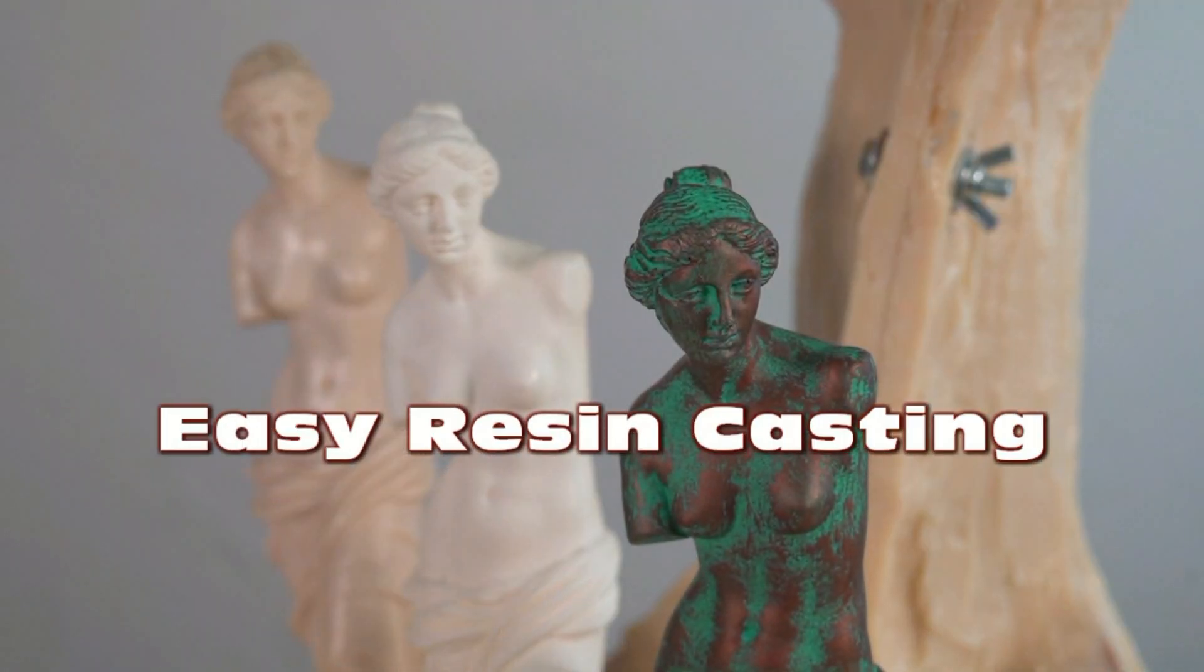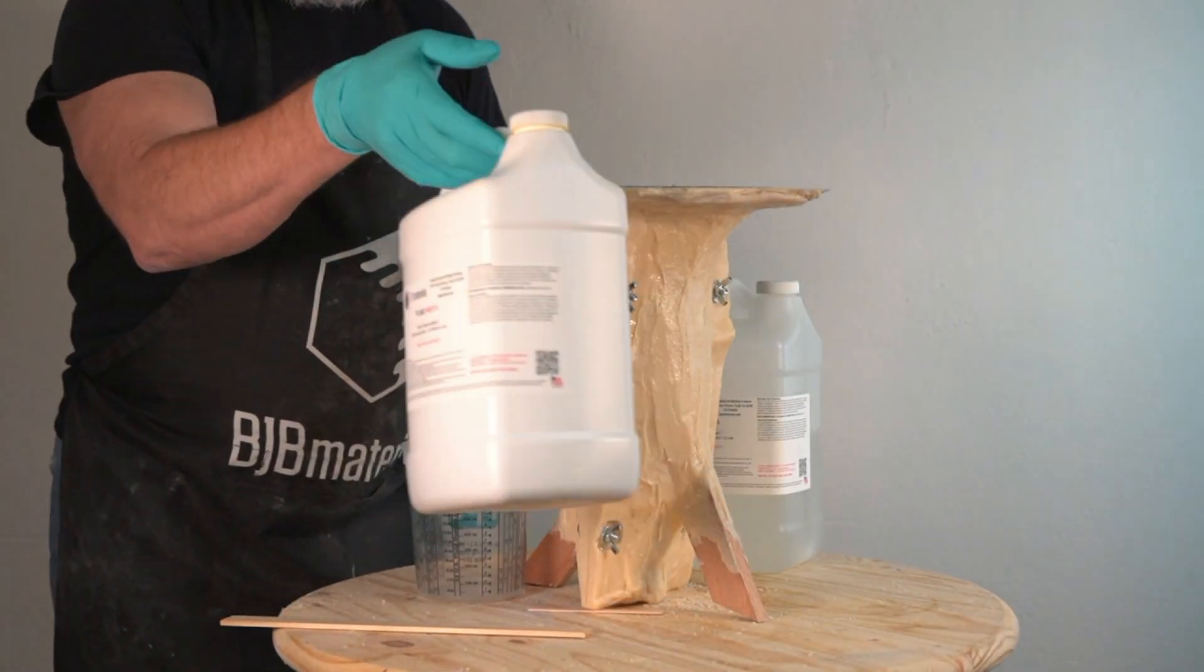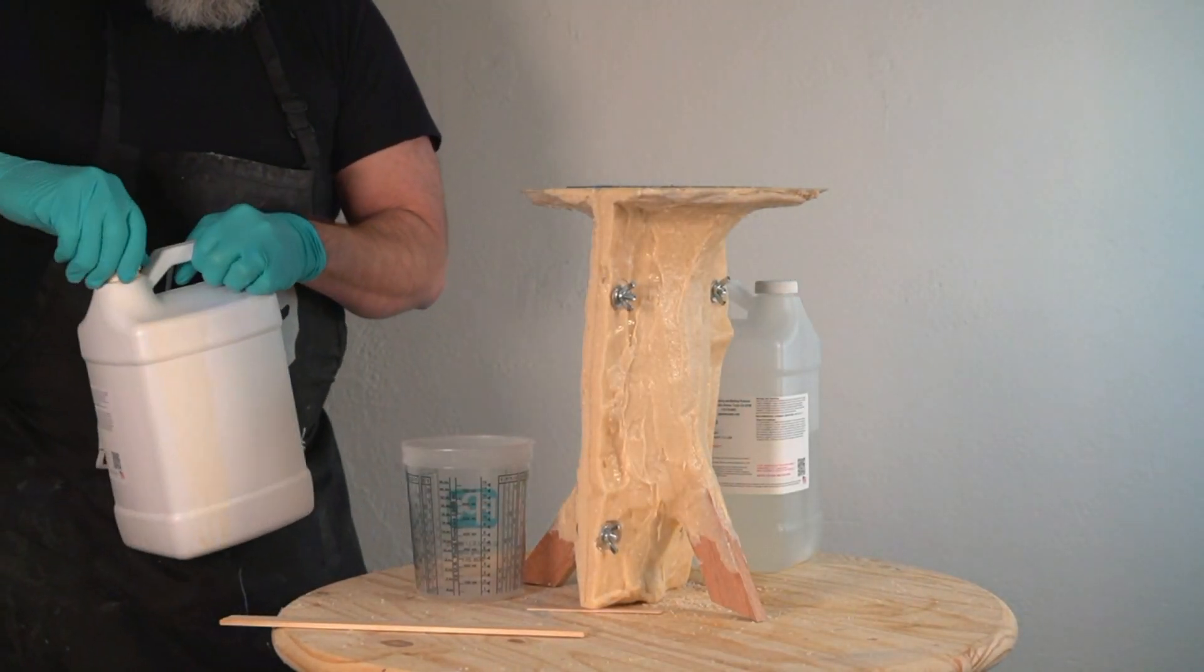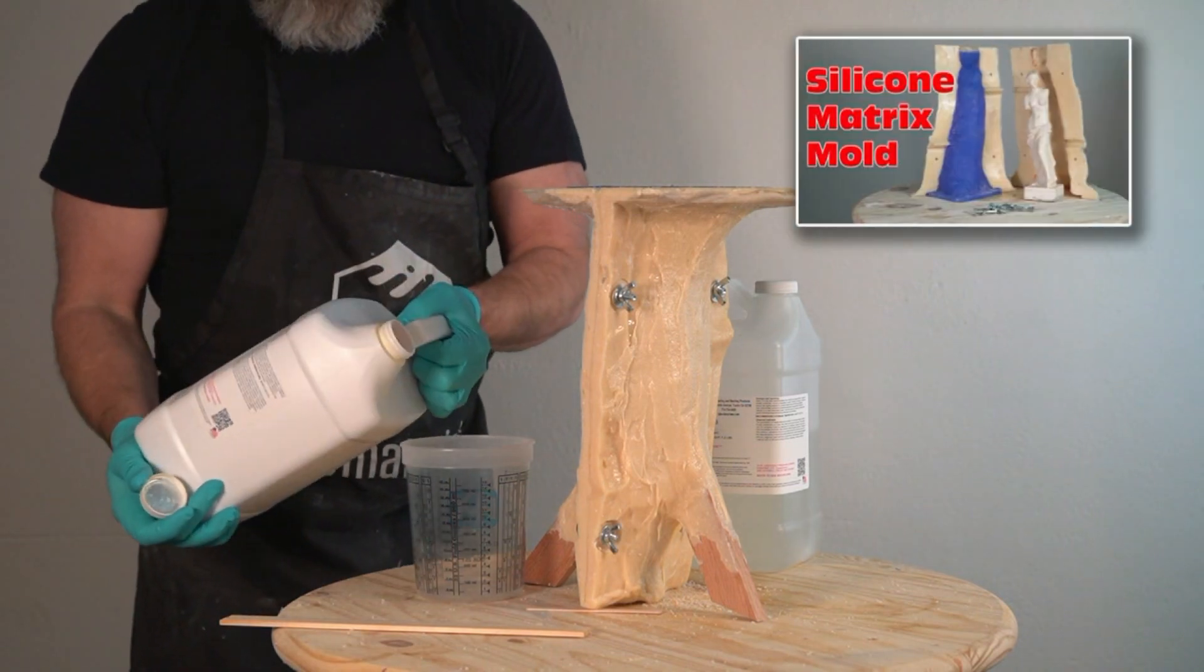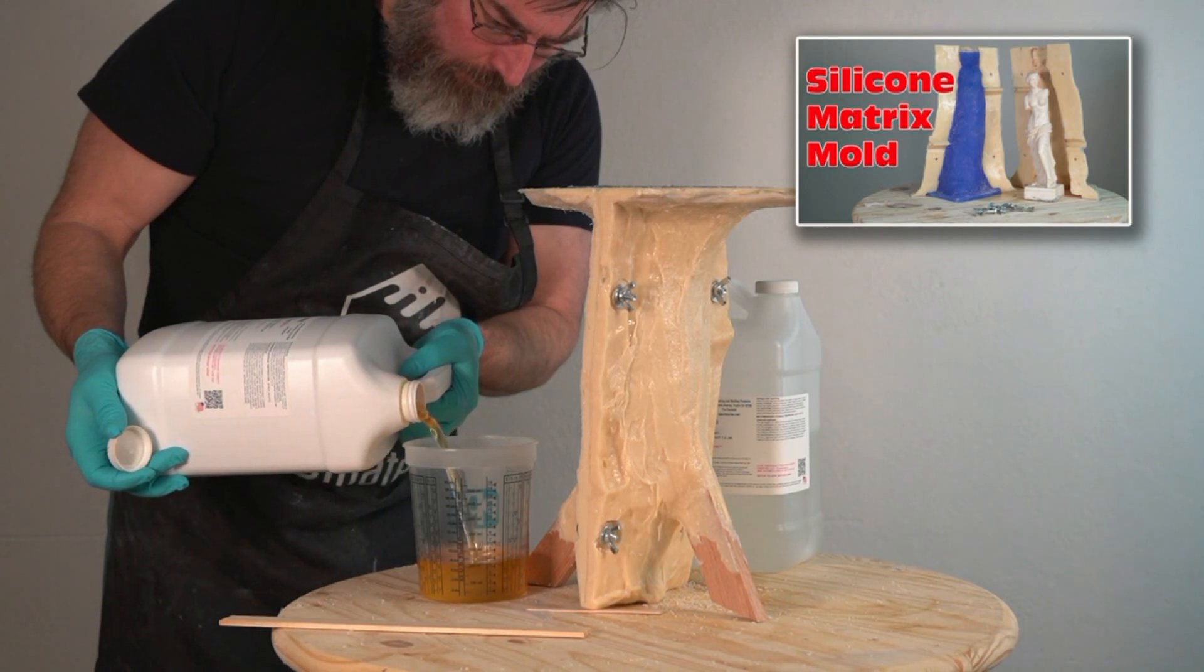Easy resin casting using TC802 polyurethane casting resin. In this video I'm going to be pouring up some simple resin casts from a matrix mold made in a previous video. If you haven't seen that tutorial, definitely check it out. I'll link it on the end screen.